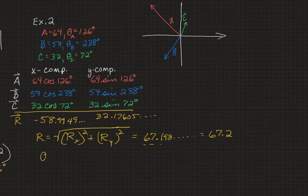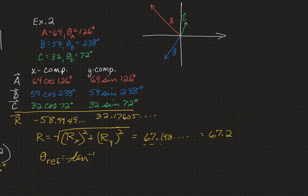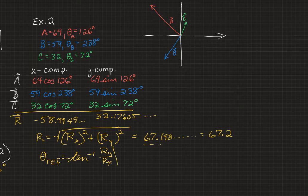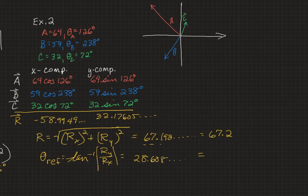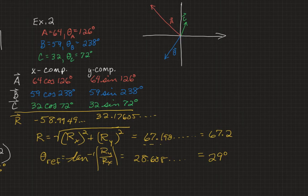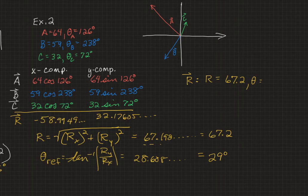We do need to figure out the standard angle for the new vector. We start by finding the reference angle, and taking the inverse tangent of R sub y over R sub x. It is an absolute value. We go up and grab those R sub y and R sub x values, and make them both positive, because we want the absolute values. And we should get 28.608 blah blah blah blah, which is equal to 29 degrees. We now have the resultant vector R, such that the magnitude of R is equal to 67.2, and the standard angle of R is, whoa, we do not have the standard angle. We have the reference angle. Where is this angle?